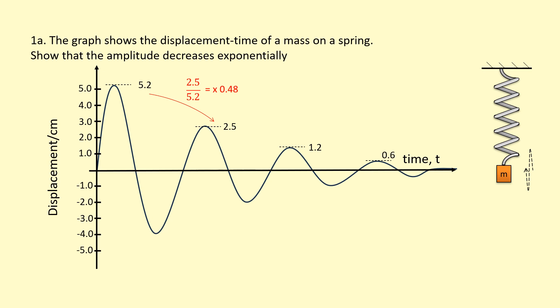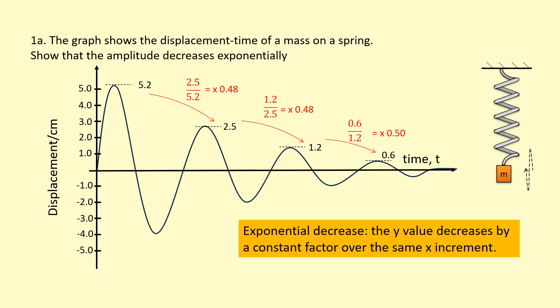If I repeat this again, going from 2.5 to 1.2, 1.2 divided by 2.5 is basically a multiple of times 0.48, so that's the same. And again, if we repeat this, we're roughly getting the same factor. So an exponential decrease, which we know this follows roughly, is when the y value decreases by a constant.